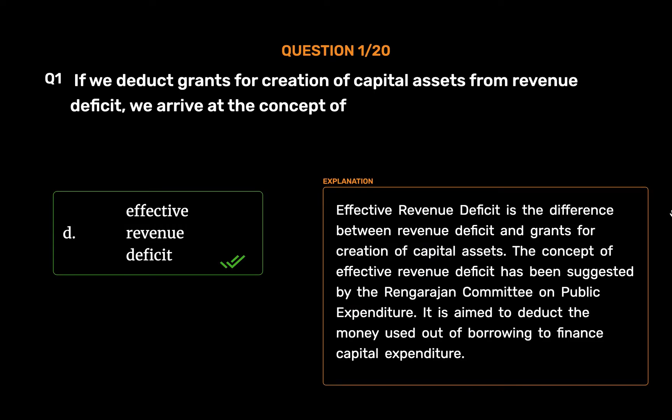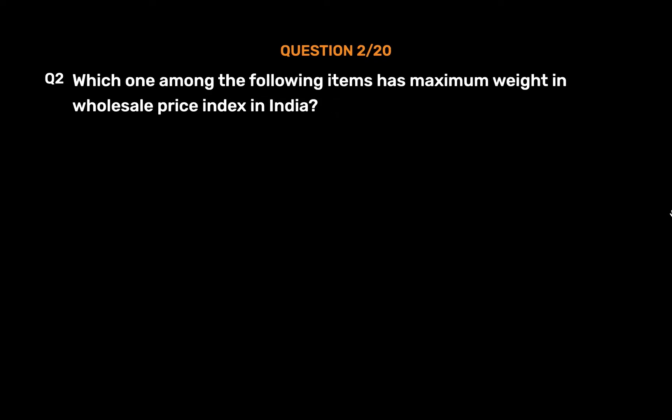Effective Revenue Deficit is the difference between revenue deficit and grants for creation of capital assets. The concept of Effective Revenue Deficit has been suggested by the Rangarajan Committee on Public Expenditure. It is aimed to deduct the money used out of borrowing to finance capital expenditure.